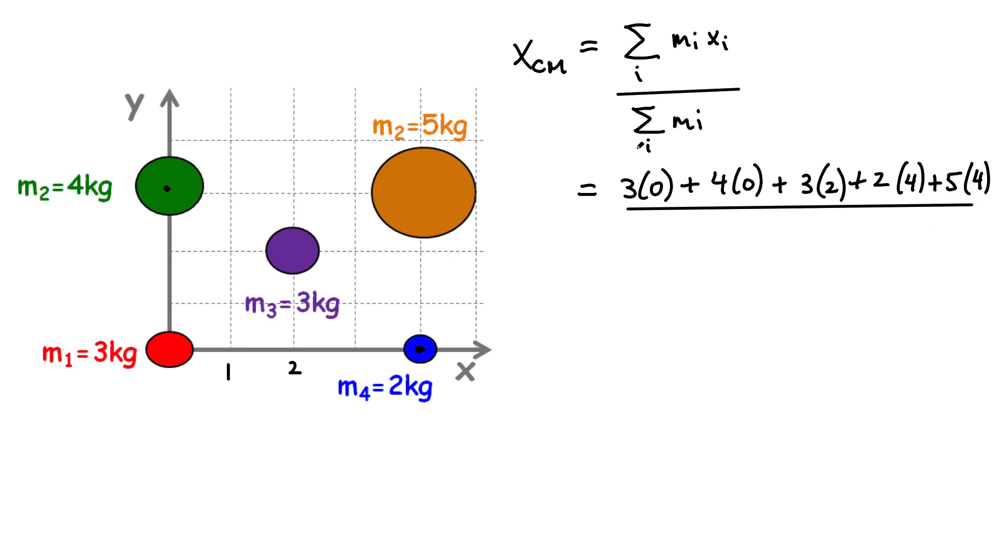All right. At the end, we need to simply sum up all the masses. So here we have three plus four plus three plus two and plus five. We can simplify some of these terms here. Don't include any of those contributions. What you end up getting here is six plus eight and plus 20. And all of that divided by, this looks like 17. If I do it correctly, this is an easy one. 34 over 17, which gives me two units. That's the X coordinate for our center of mass.